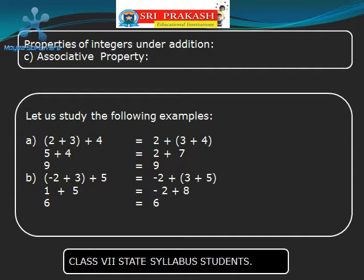Now what we do: let us take 3 and 4 as a group and add them. We get 7. Then let us add 2 to 7, and we get 9. So our conclusion is: if we take three integers and add them in any manner — that means taking any two numbers as a group and adding the third number — the result will be the same.